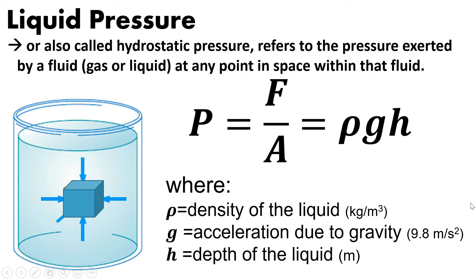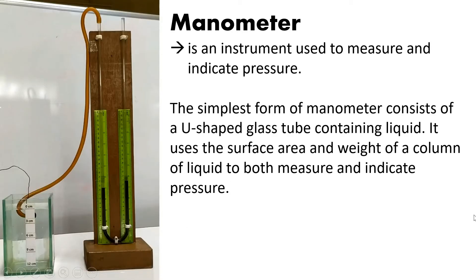Liquid pressure, also called hydrostatic pressure, refers to the pressure exerted by a fluid at any point in space within that fluid. For this experiment, we will use a manometer — an instrument used to measure and indicate pressure. This is the simplest form of manometer: a U-shaped glass tube containing a liquid, in this case colored water. It uses the surface area and the weight of the column of liquid to both measure and indicate pressure.